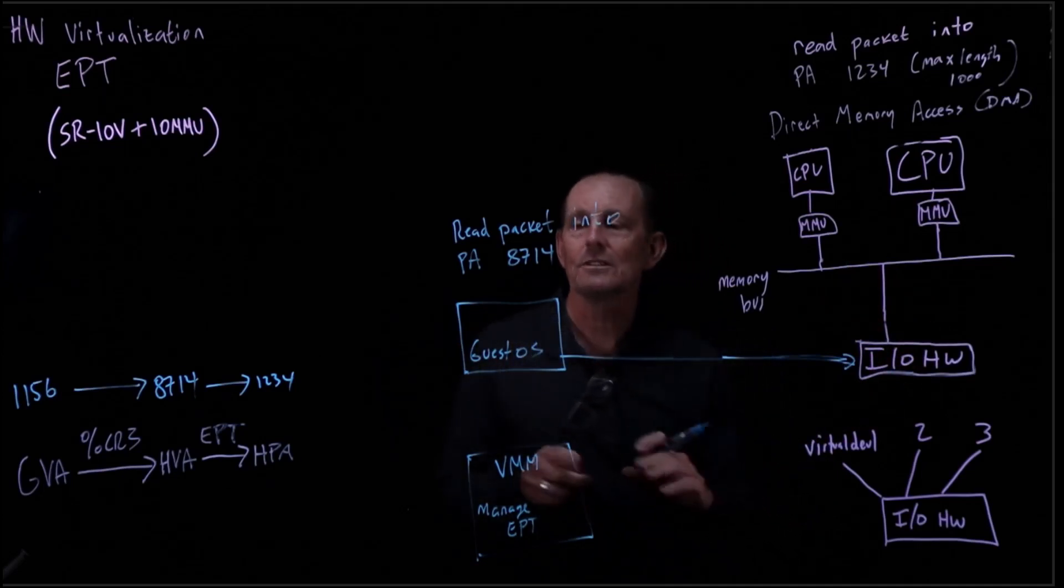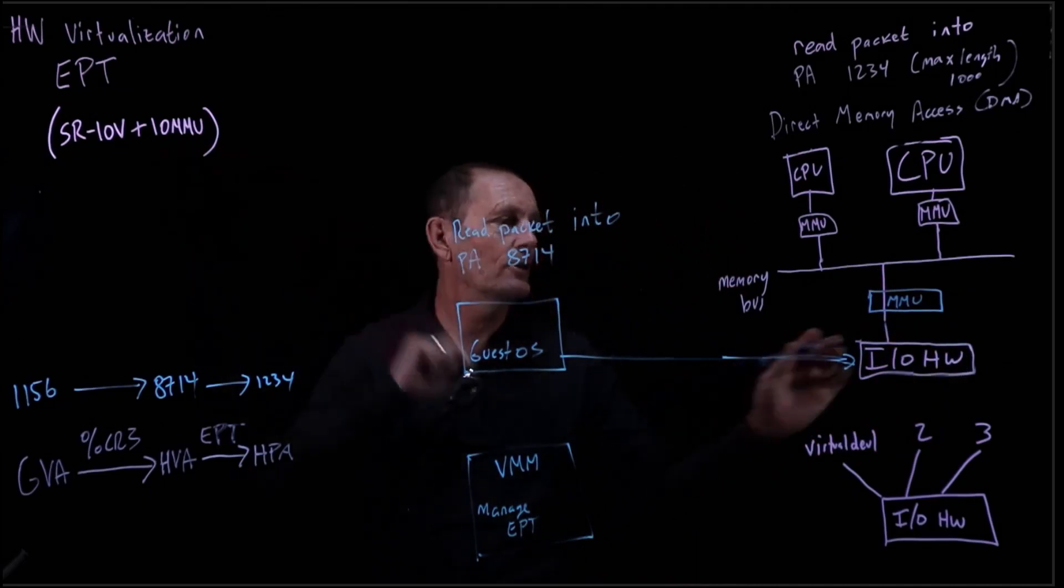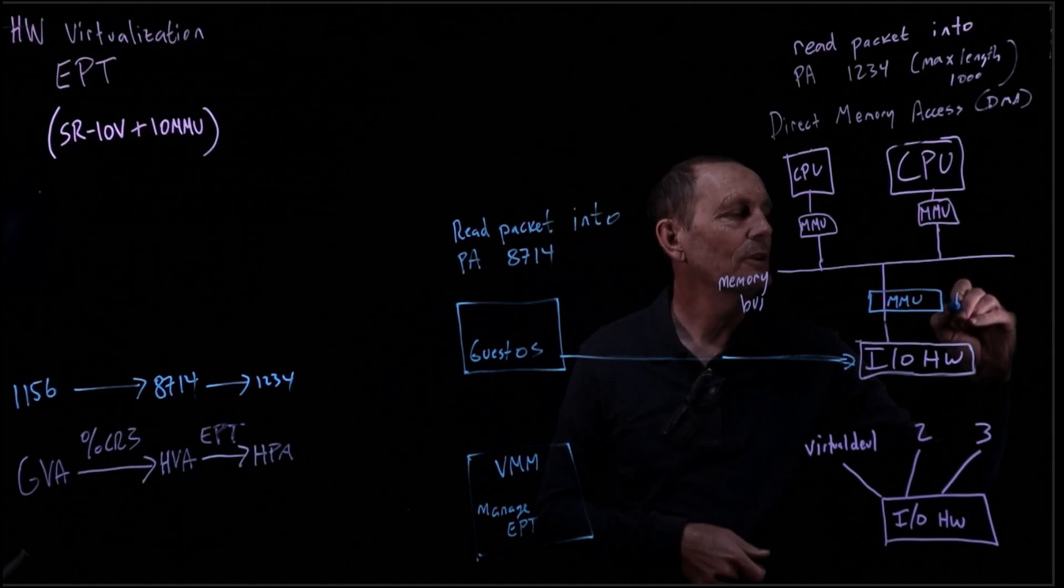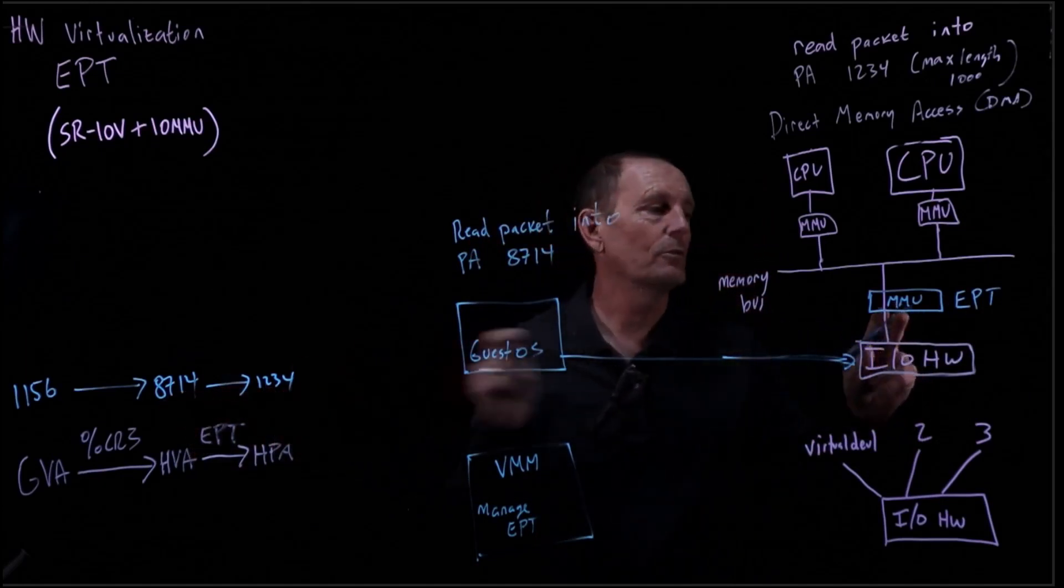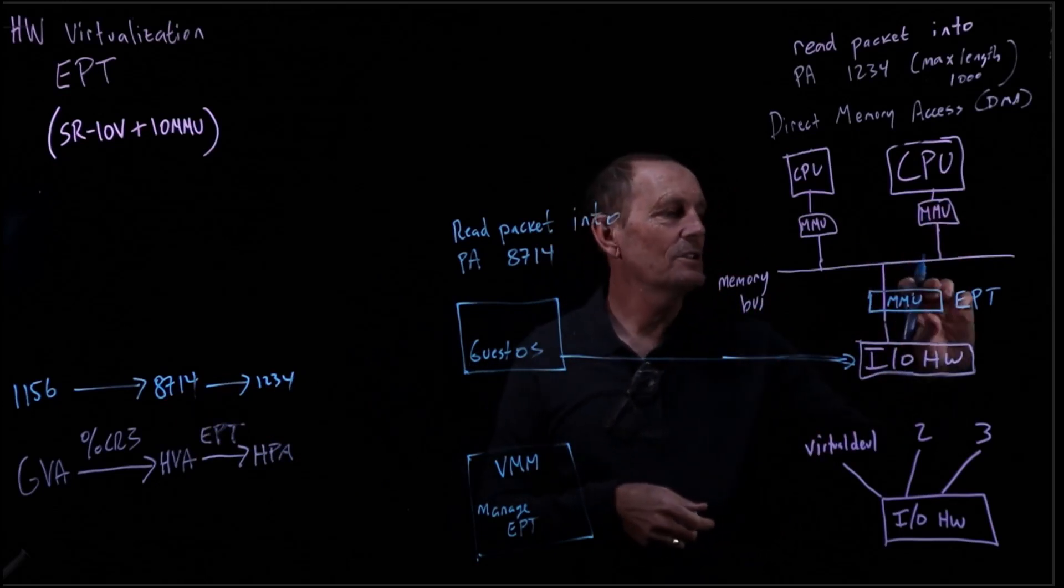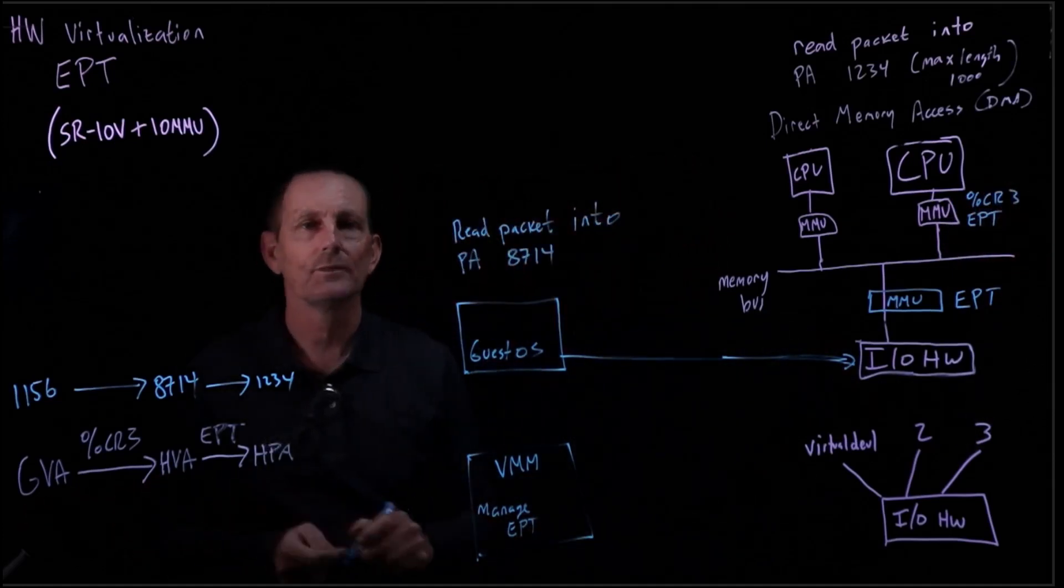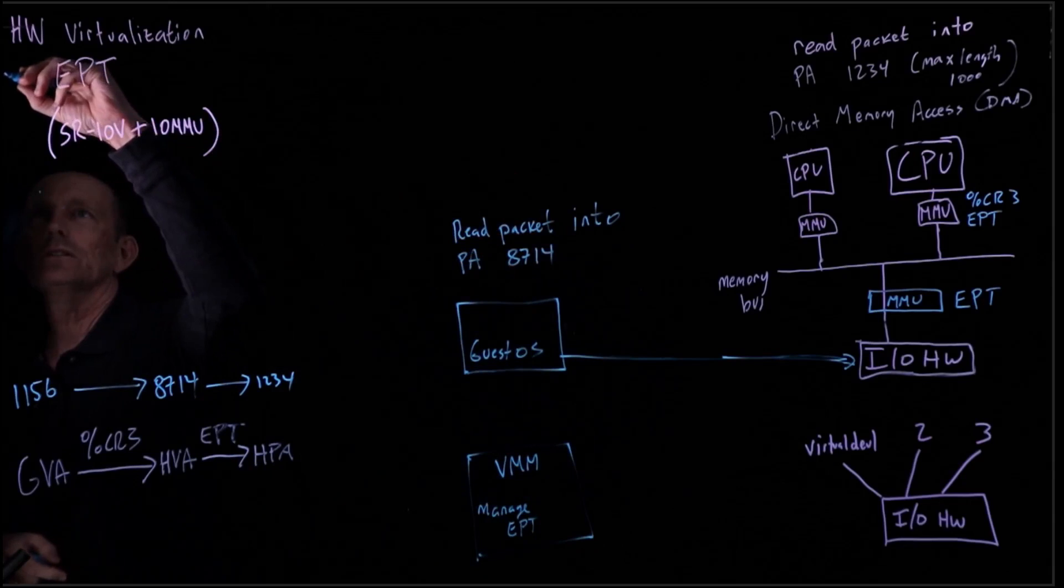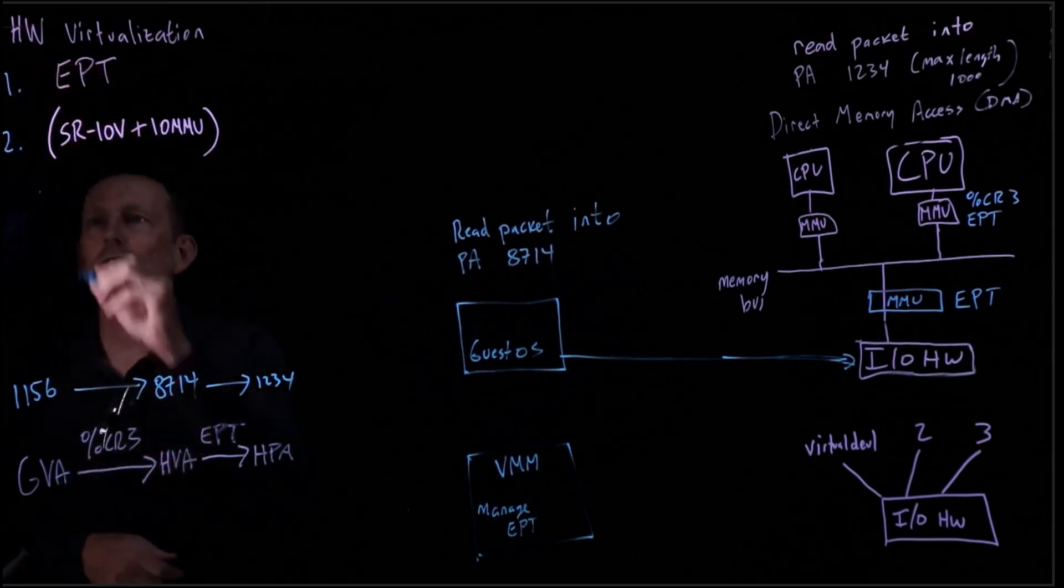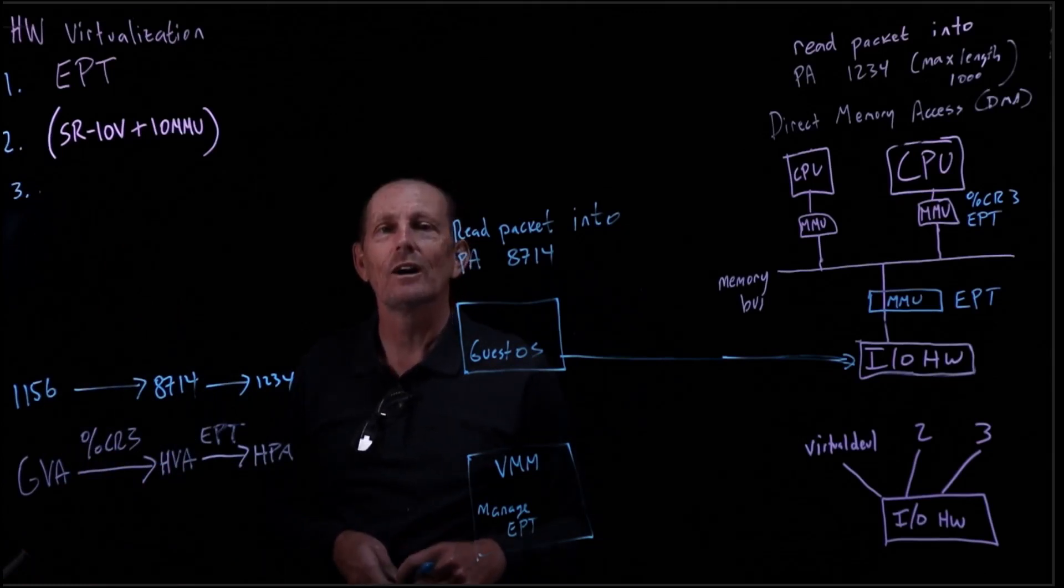The solution then, to allow the guest OS to maintain this fiction that it is actually dealing with physical addresses, is we add an MMU here. This is what's called IO MMU. This IO MMU knows how to translate through the EPT. It will take the 8714 and feed it through the MMU. The MMU will do the conversion 8714 to 1234, and that's what will show up in the memory bus. Notice this is a limited version of the MMU. The MMUs attached to the CPU not only do a translation through EPT, they also do a translation through CR3 because they're doing this two-level translation. So that is IO MMU. This is one of the three, so EPT is one. These two combinations for IO are two.